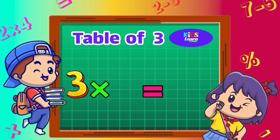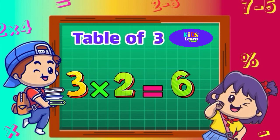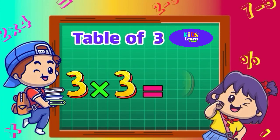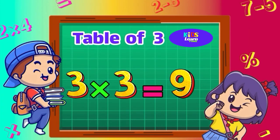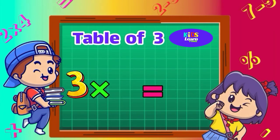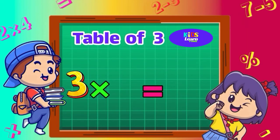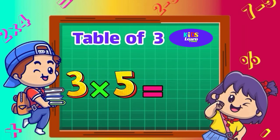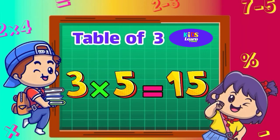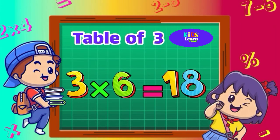Three twos are six. Three threes are nine. Three fours are twelve. Three fives are fifteen. Three six are eighteen.